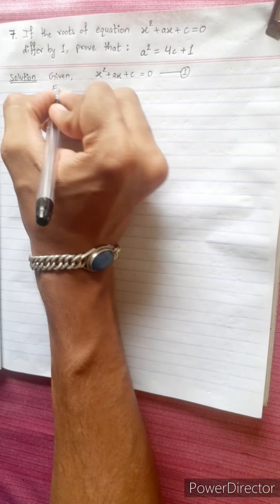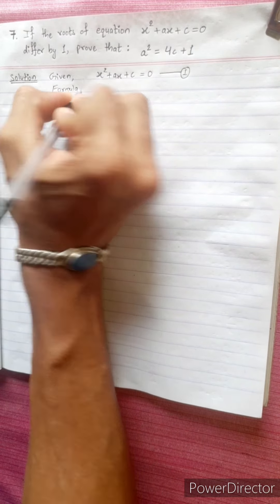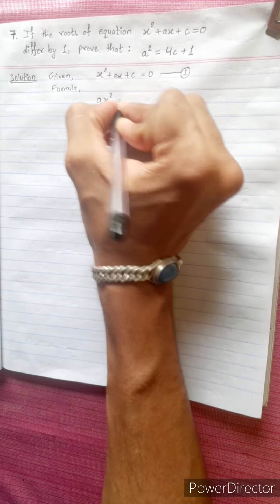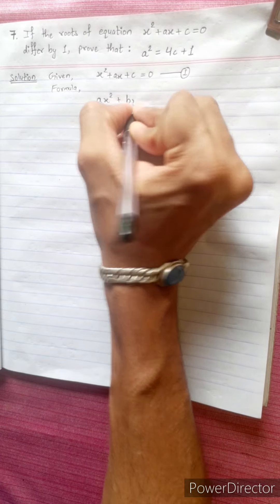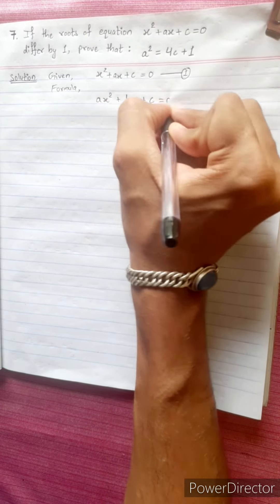We will compare this with the standard quadratic equation. The standard quadratic equation is Ax² + Bx + C = 0. This is equation 2.